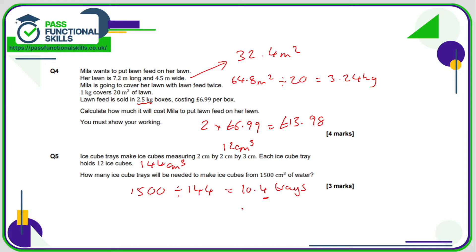11 trays, because we're going to need to round this up. If we round it down to 10, then we haven't used all of the water needed—we wouldn't have 1500 cubic centimeters worth. 11 trays is the closest number that will give us at least 1500.